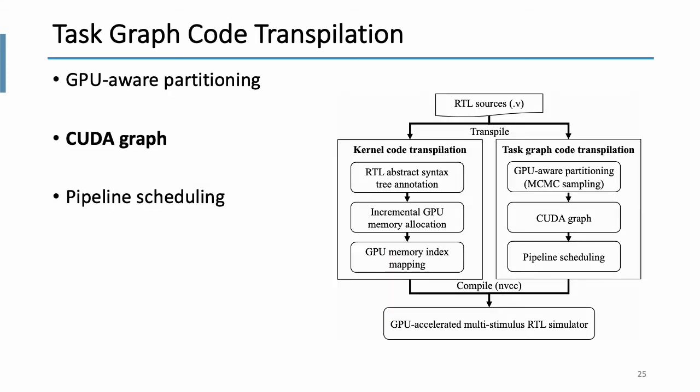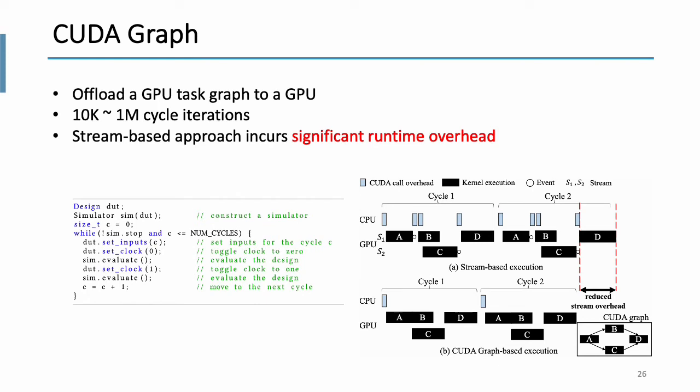Next, CUDA graph. After obtaining a partitioned GPU test graph, we need to offload it to our GPU. Note that, RTL simulation typically will run thousands or even millions of cycles to do verification. The traditional stream-based approach will incur significant runtime overhead, because each kernel is launched by CPU, and this results in large amounts of CUDA code overhead. What's worse is that these overheads accumulate across cycles. On the other hand, CUDA graph can eliminate these overheads by defining the graph once and running the graph repeatedly. So, in our design, we leverage CUDA graph to offload our workload to GPU.